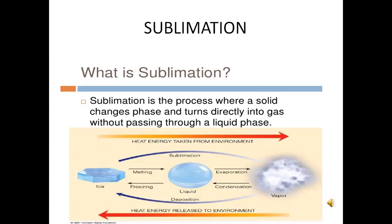Sublimation: sublimation is the process where a solid changes phase and turns directly into gas without passing through a liquid phase. Ice can directly convert to vapor through sublimation. There are certain solid substances like camphor and naphthalene that get converted into gas directly upon heating without becoming liquid. This is sublimation.